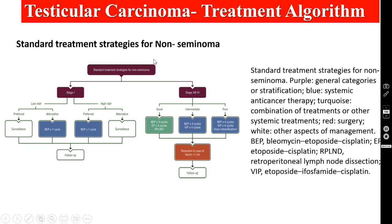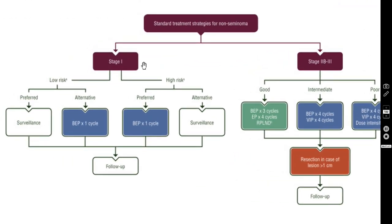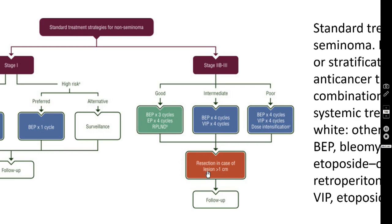For non-seminomatous tumors: these are not radiosensitive, so you should not give radiotherapy. Everywhere you do radical high orchidectomy. In early cases of non-seminomatous germ cell tumors, you do retroperitoneal lymph node dissection because there is no role for radiotherapy. In late cases, give combination chemotherapy — bleomycin, etoposide, and cisplatin. Note that retroperitoneal lymph node dissection should be done only if the lesion is more than one centimeter.